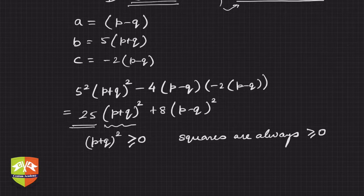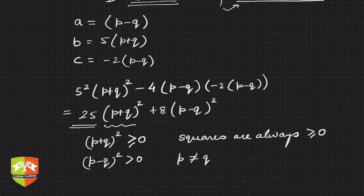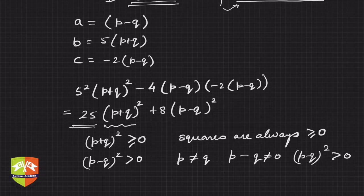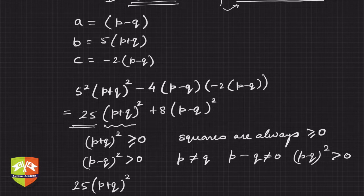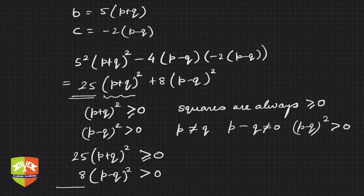In the second term, (p-q) is not equal to 0 because p is not equal to q — that is given. So definitely (p-q)² will be strictly greater than 0, because squares are never negative. That means 8(p-q)² is certainly greater than 0. And 25(p+q)² is always greater than or equal to 0.